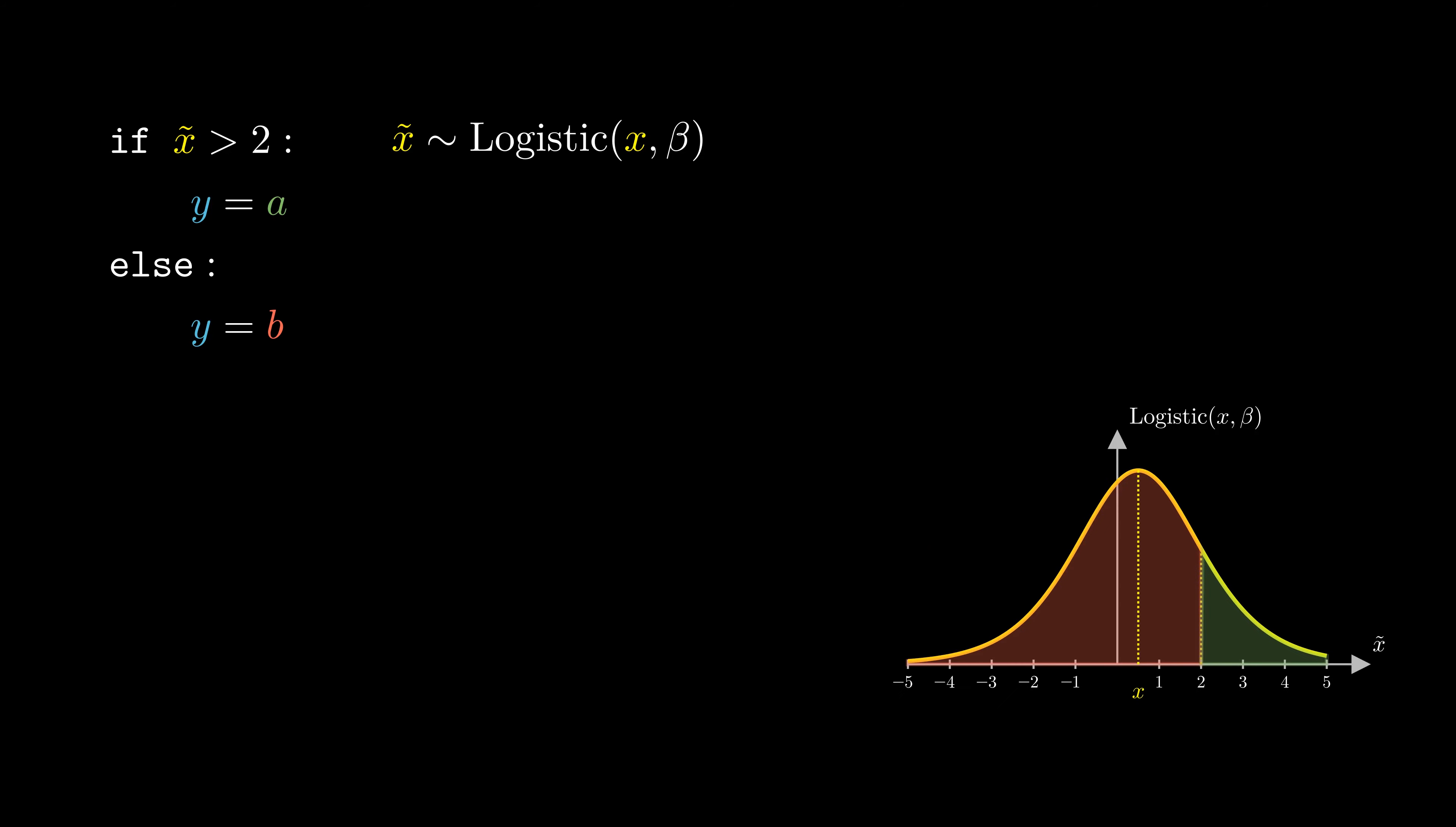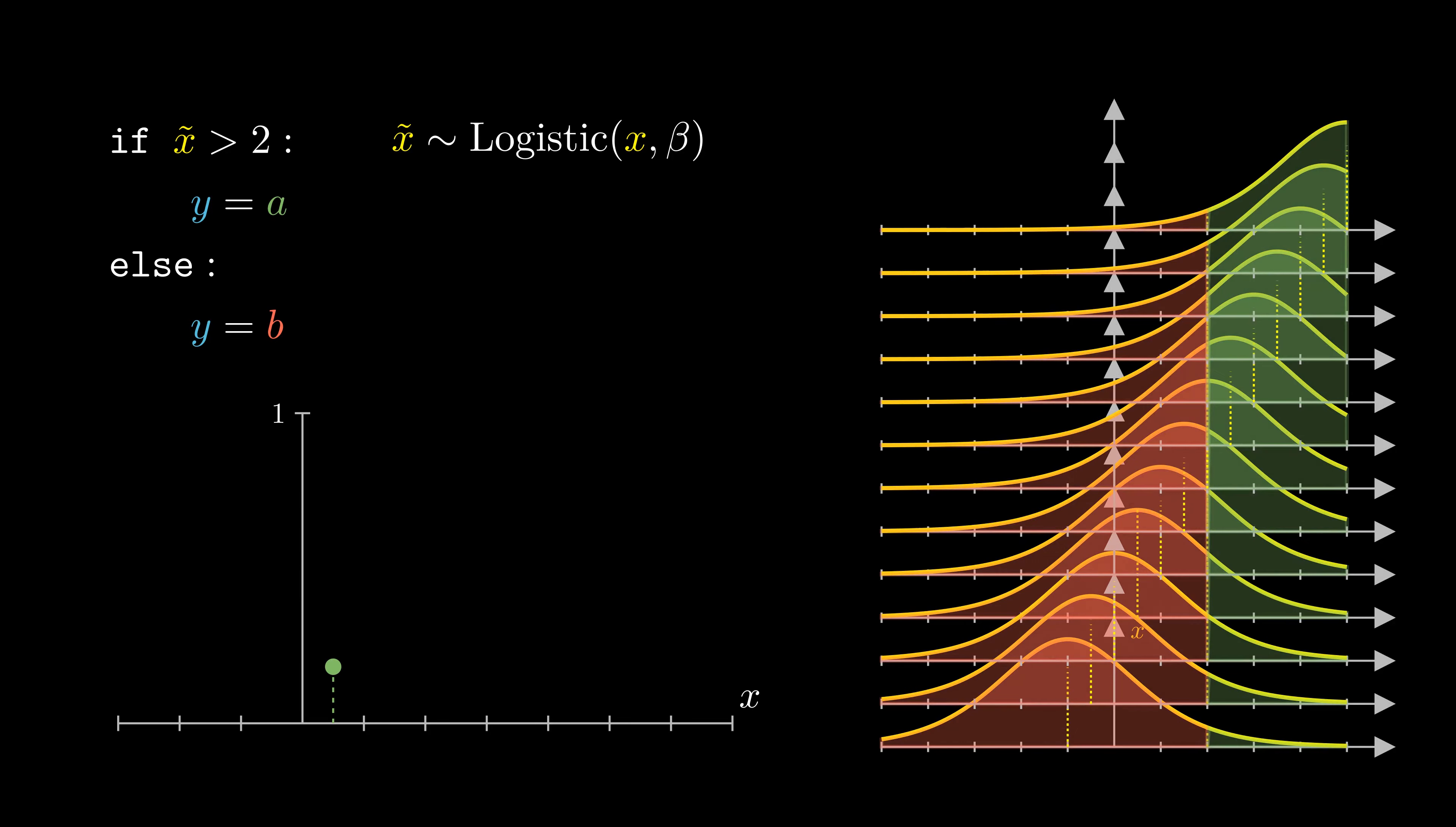Let us now consider the probability of the statement being true for different x. For our current x at 0.5, we have a probability of around 20% that the statement is true, which we obtain by integrating over the green area. Varying x, we can evaluate this for different x, integrate the green area for each of them, and we obtain the plot on the left.